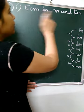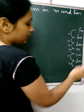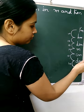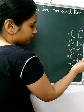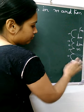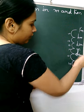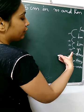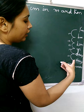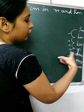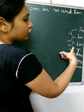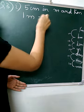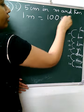So we need to convert centimeter into meter. Centimeter — 1, 2 — so how many steps? 2 steps. That means 2 zeros. So 1 meter is equal to 100 centimeters.